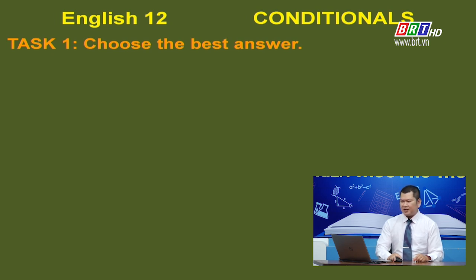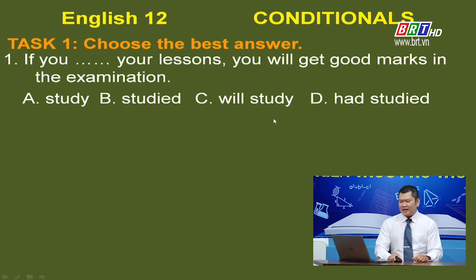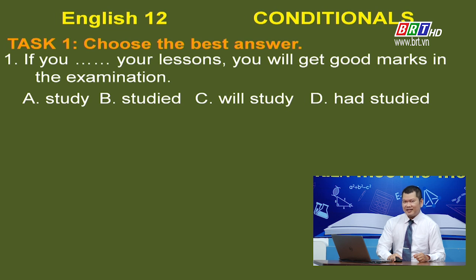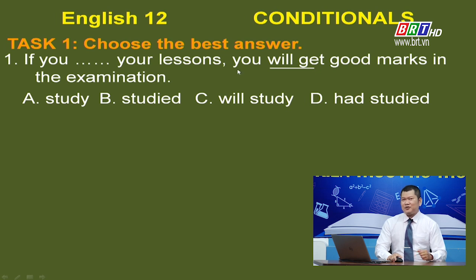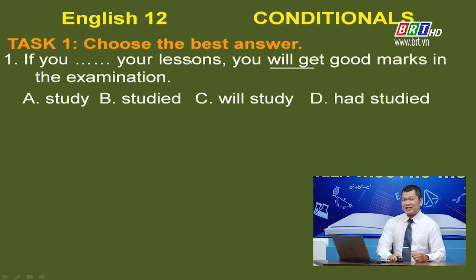Task 1: Choose the best answer. In question 1, you must choose the correct verb form. The sentence has two clauses: the if-clause and the main clause. What do we base our choice on? We look at the verb in the main clause, then choose the correct form for the if-clause. The main clause shows simple future tense, so this is a Type 1 conditional. The if-clause should be in the simple present tense. The correct answer is option A.